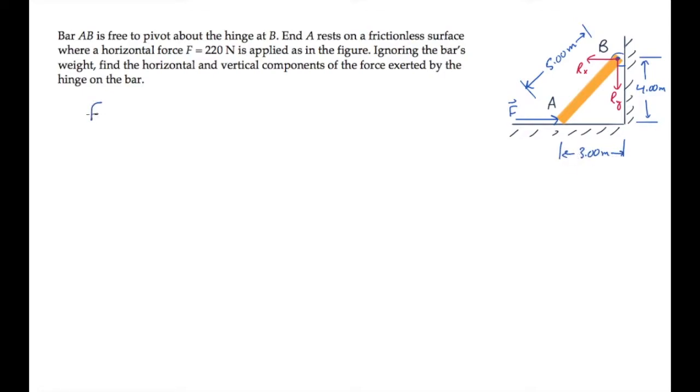Now we can draw the free body diagram for the bar and apply the conditions of equilibrium. Rx and Ry act at the top end of the bar at point B. At the bottom end, force F pushes horizontally, and the normal force is directed vertically upward.